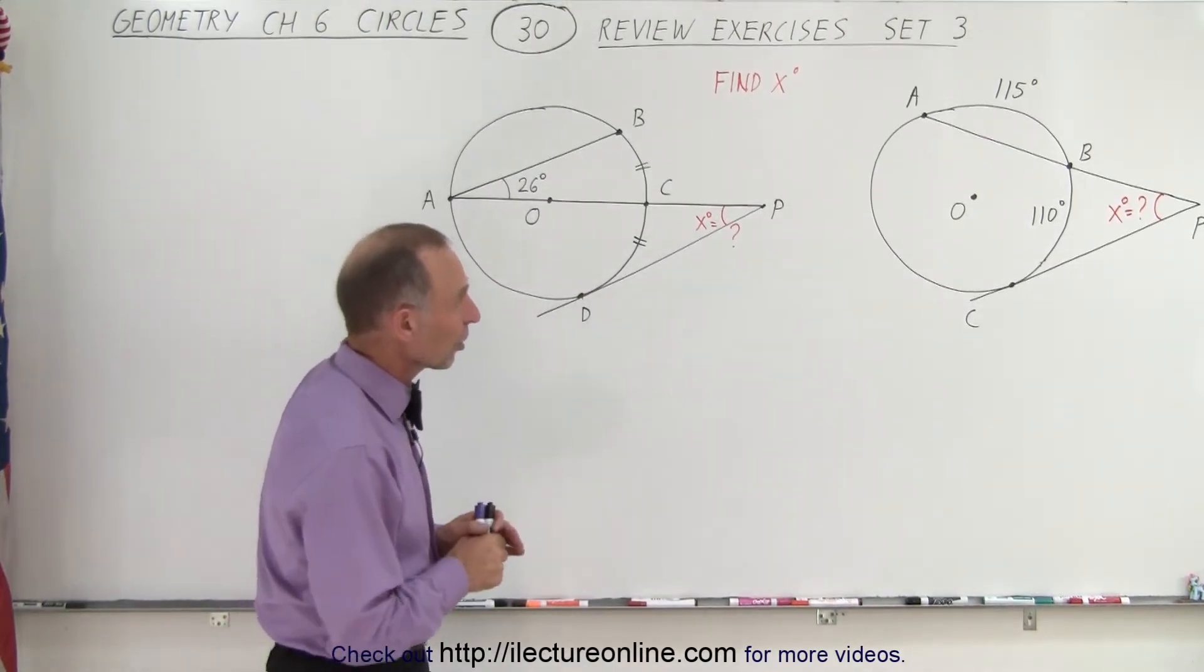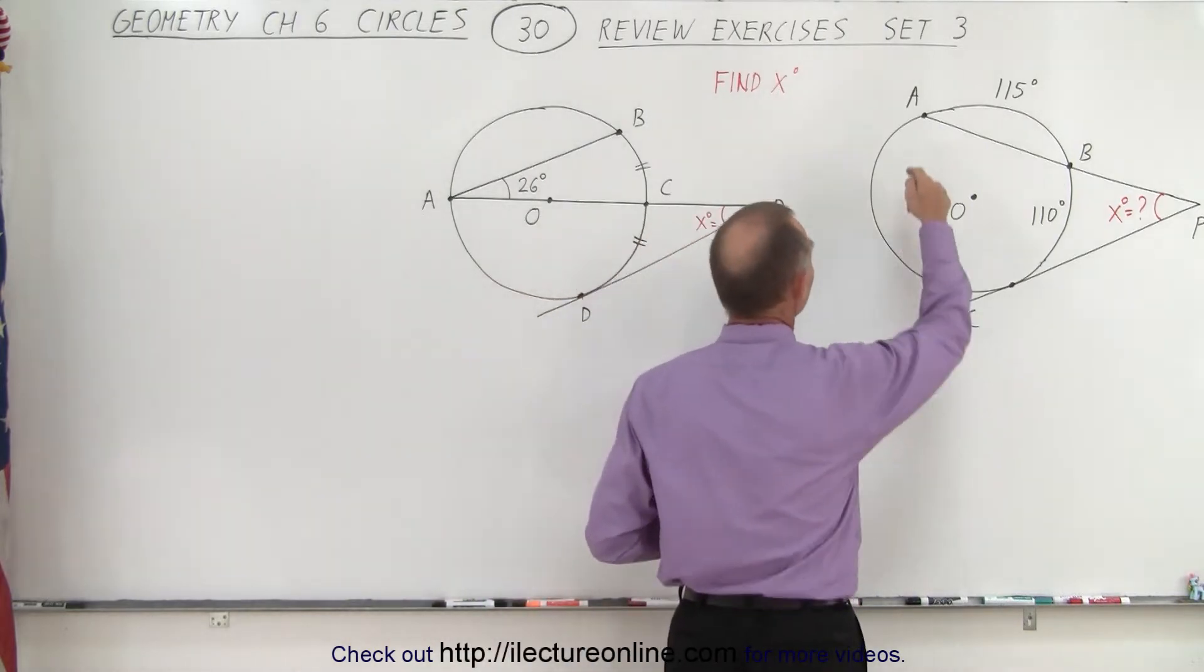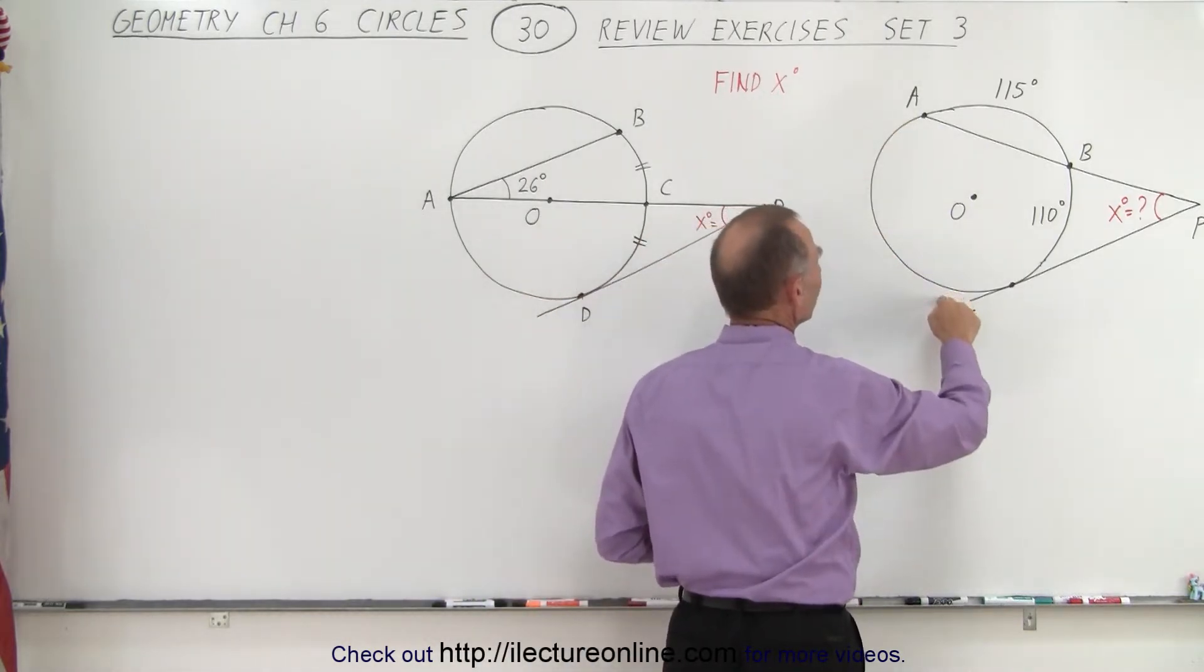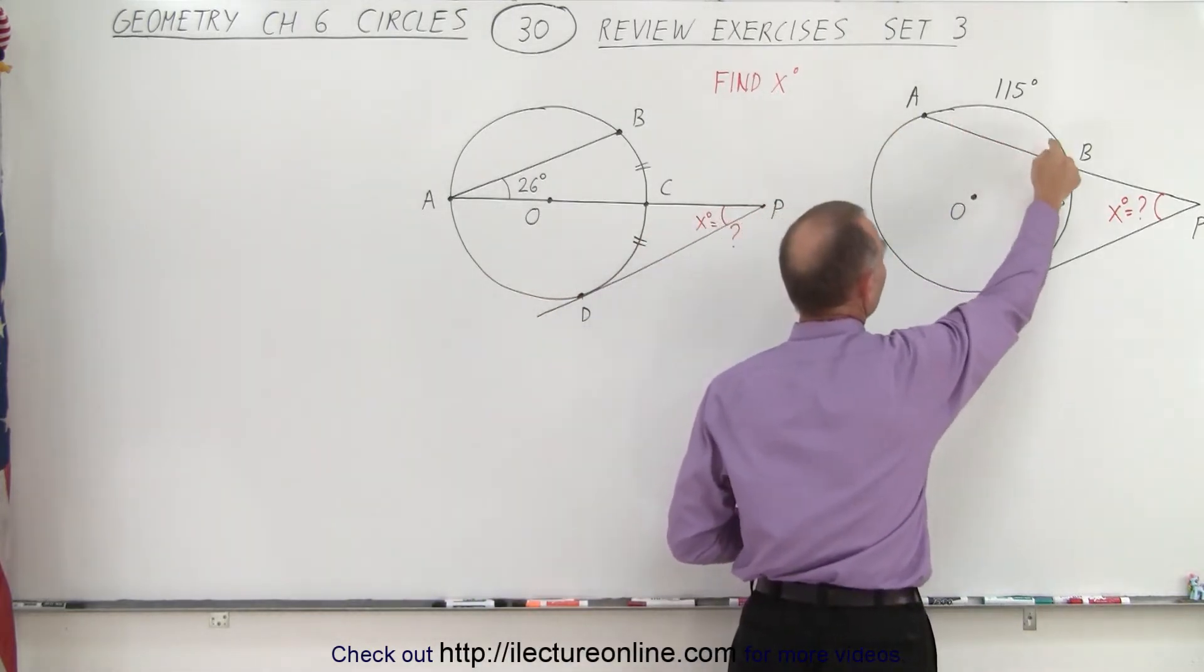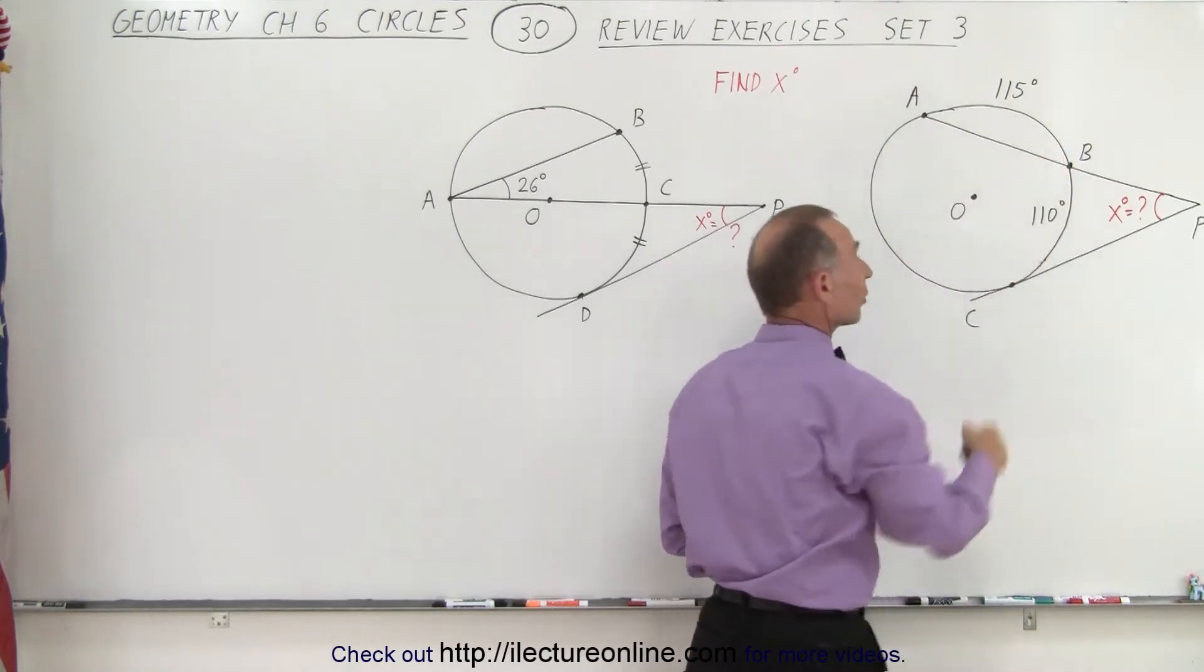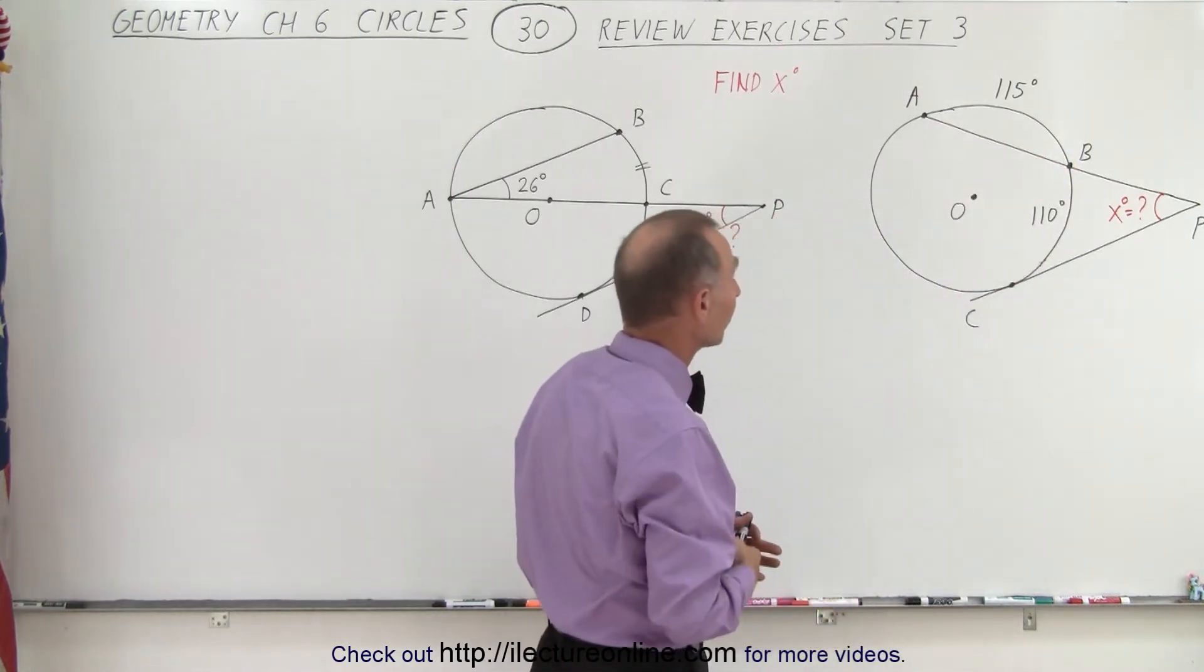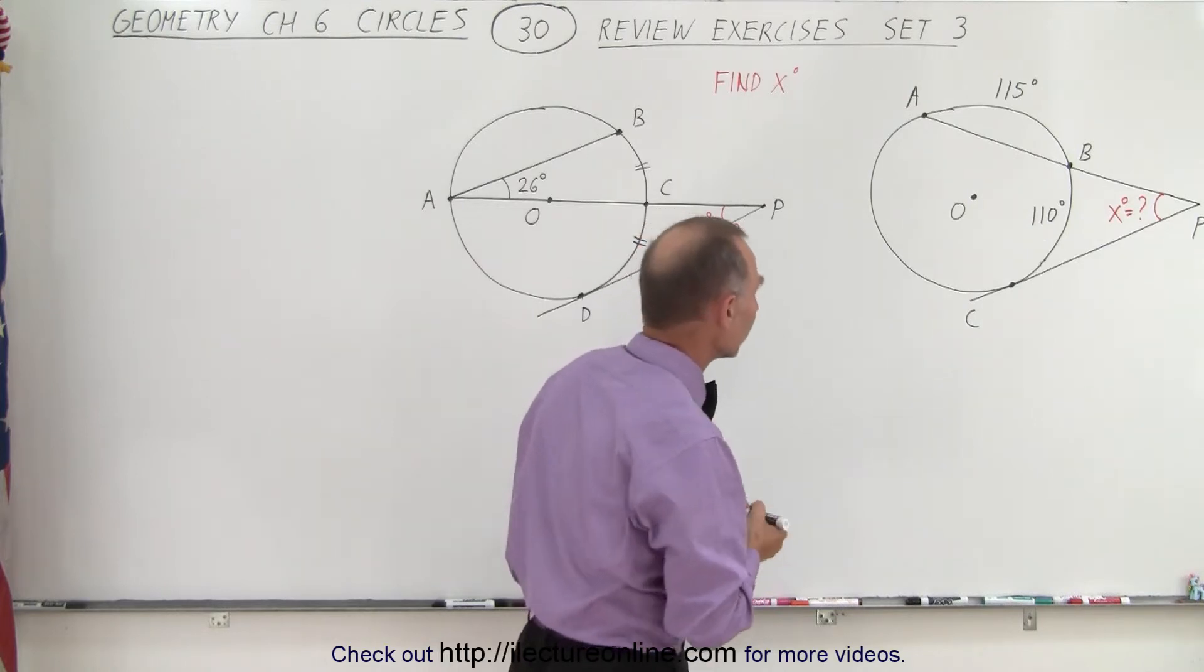We probably want to start by finding the value for the measure from A to C. Since we're given the measure from A to B and from B to C, we can then conclude and say the three summed together should add up to 180 degrees.